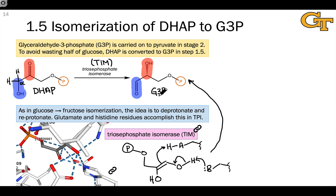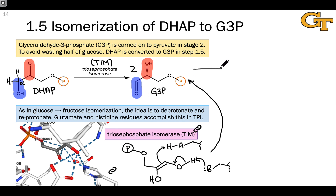Now we're ready to enter stage two, because we have taken overall one equivalent of glucose and converted it to two equivalents of G3P. The same set of enzymatic machinery operates on both equivalents of G3P, so the convergence has come into focus here — we've made two equivalents of this molecule from one equivalent of glucose. Only one set of enzymes is going to be involved in stage two, which is really the payoff phase. We're going to take G3P and convert it into something that wants to give up a phosphate group to ADP in order to form ATP.